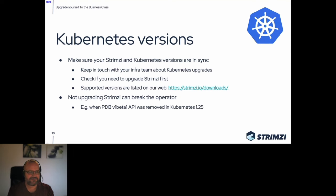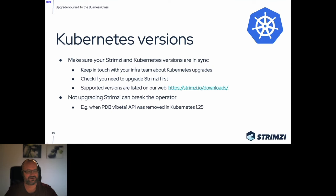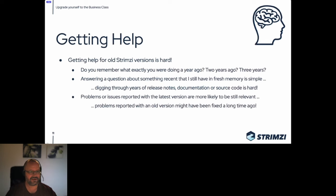It's important to stay in sync with the teams managing your Kubernetes clusters. Supported Kubernetes versions can always be found on our website in the download section. In the past with Kubernetes 1.25, some users running very old Strimzi versions had their clusters break when the pod disruption budget API was removed. Nobody noticed for months, certificates expired, and the whole Kafka cluster broke down.